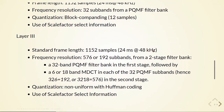Layer 3 has a standard frame length of 1152 samples — also 24 milliseconds at 48 kilohertz — and has different frequency resolutions. It can be 576 or 192 subbands from a two-stage filter bank. The first stage is a 32-band PQMF filter bank, followed by either a 6-band or 18-band MDCT in each of the 32 PQMF subbands, giving 32×6=192 or 32×18=576 subbands in the second stage. It uses non-uniform quantization with Huffman coding and scale factor select information.